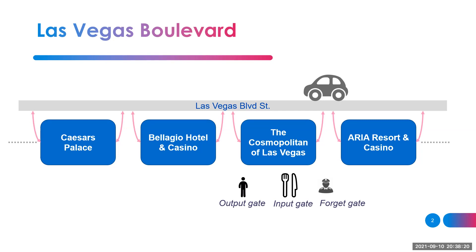The third gate is the output gate. Once you went in, had your lunch or dinner, had some good time, you decide you want to go out and continue your journey walking or by car to the other casinos. So basically we have three gates: the forget gate, the input gate, and the output gate.